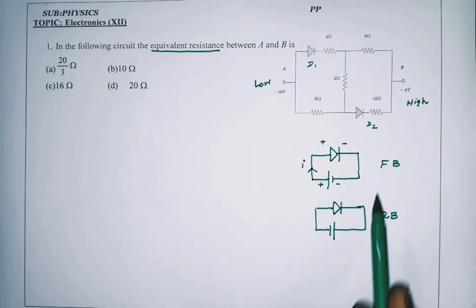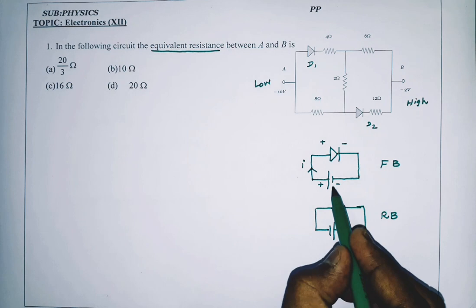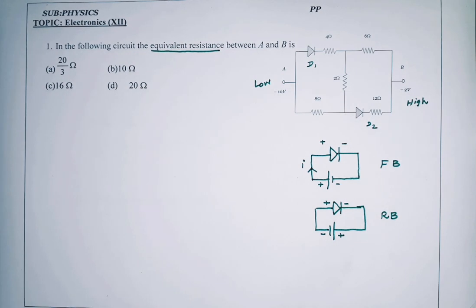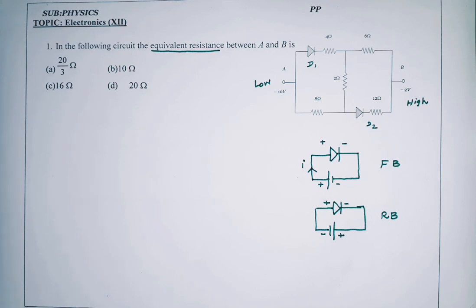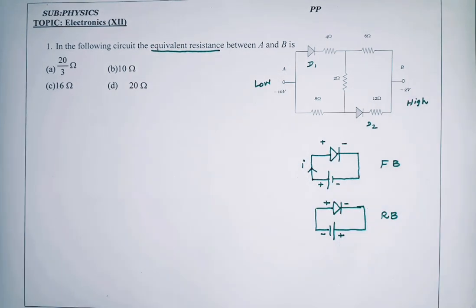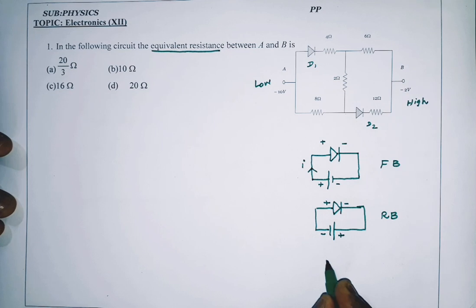This is forward bias and reverse bias — how to connect. For example, on a cycle, you are giving forward energy. This is called biasing. What biasing means is that one diode will work on the cycle.